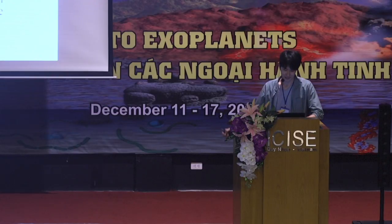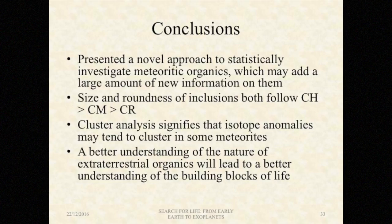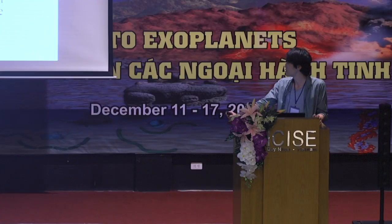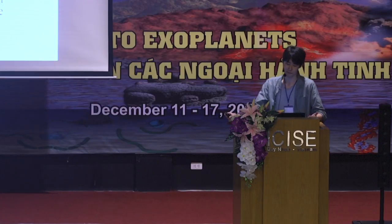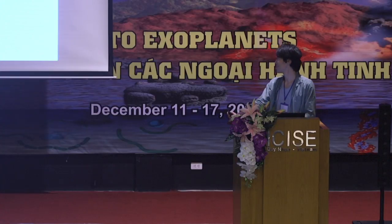Here is the conclusion. We present a new approach to statistically investigate meteoric organics, which may add a large amount of new information. Size and roundness of inclusions both follow the order CH, CM, and CR. Clustering analysis signifies that isotope anomalies may tend to cluster in some meteorites. Finally, a better understanding of the nature of extraterrestrial organics will lead to a better understanding of the building blocks of life. Thank you very much for your attention.